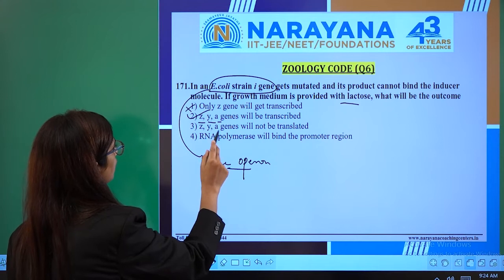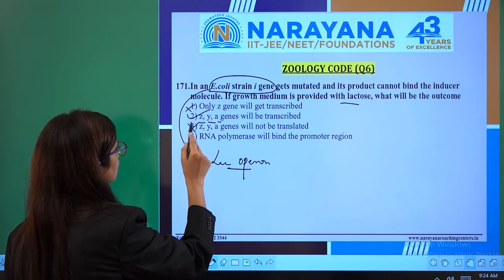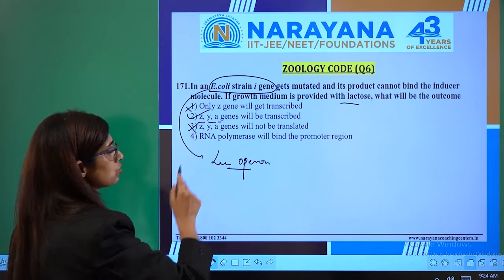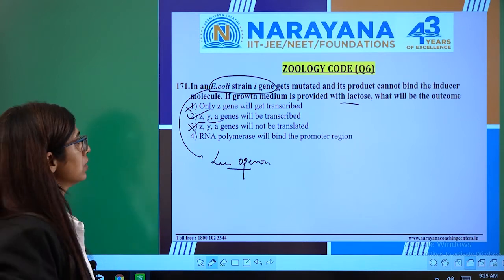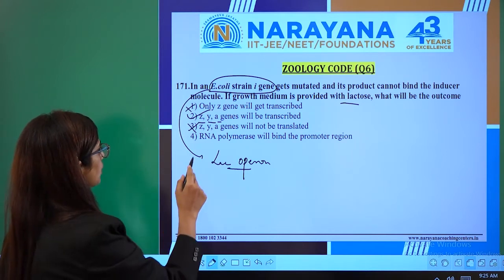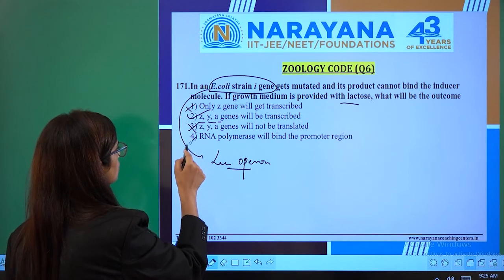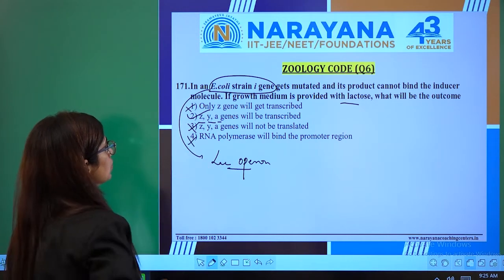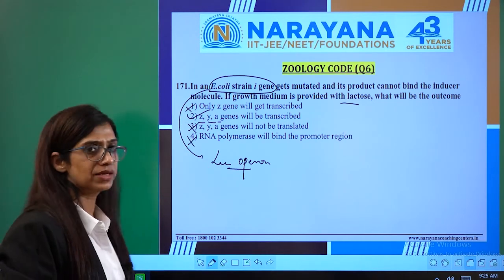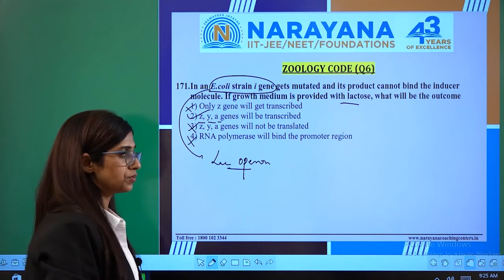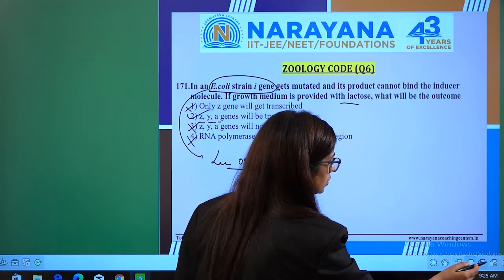Z, Y, A genes will not be translating — this is wrong. Because when we are providing lactose, they will start transcribing and RNA polymerase will bind the promoter region. This is also wrong. So in question 171, the second option is the right option. Let's move to the next question.